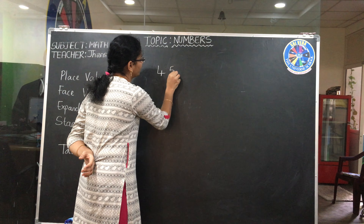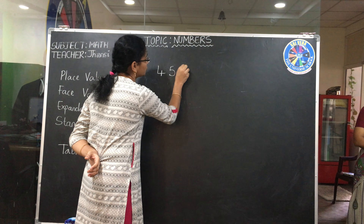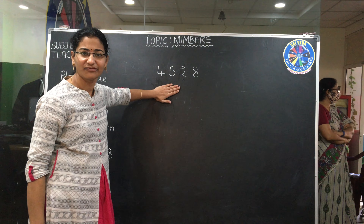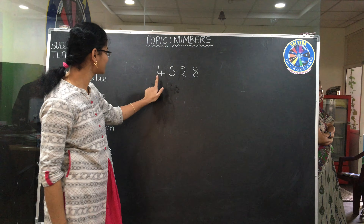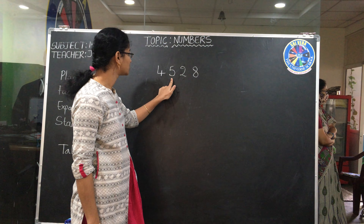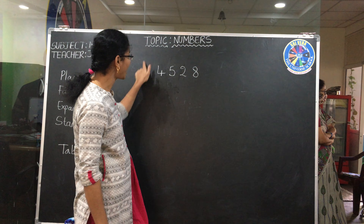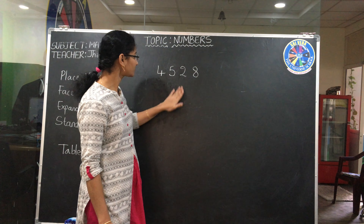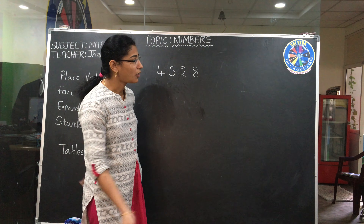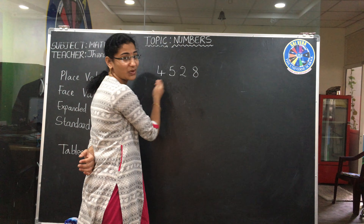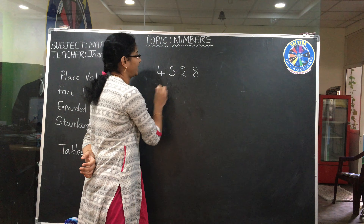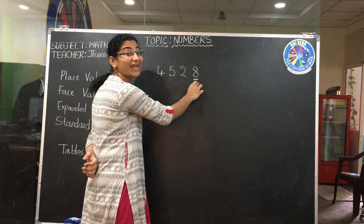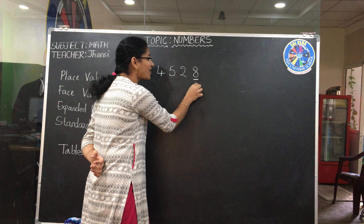Just take the number 4, 5, 2, 8. I'm taking a 4-digit number, right? Because 1, 2, 3, 4 — the number has 4 digits. That's why this is a 4-digit number. Now, we'll count place values from right to left. This is the right side. This first digit — which place is it in? One's place. This is in one's place.